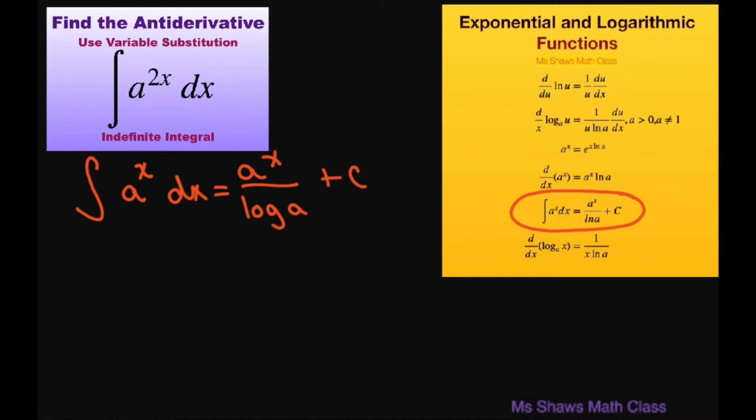Now in our case we have this 2x. So for a variable substitution, let's let t equal 2x. So derivative of t, this would be 2dx, or our dx is going to equal 1 half dt.